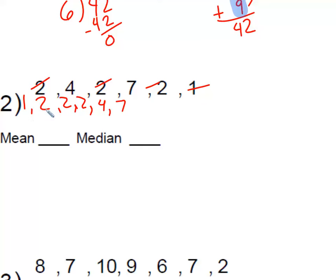It went 1, 2, 2, 2, 4, and then 7. That's order from least to greatest. Now the first thing we do, we're going to find our mean. And to find our mean, first we add and then we divide.